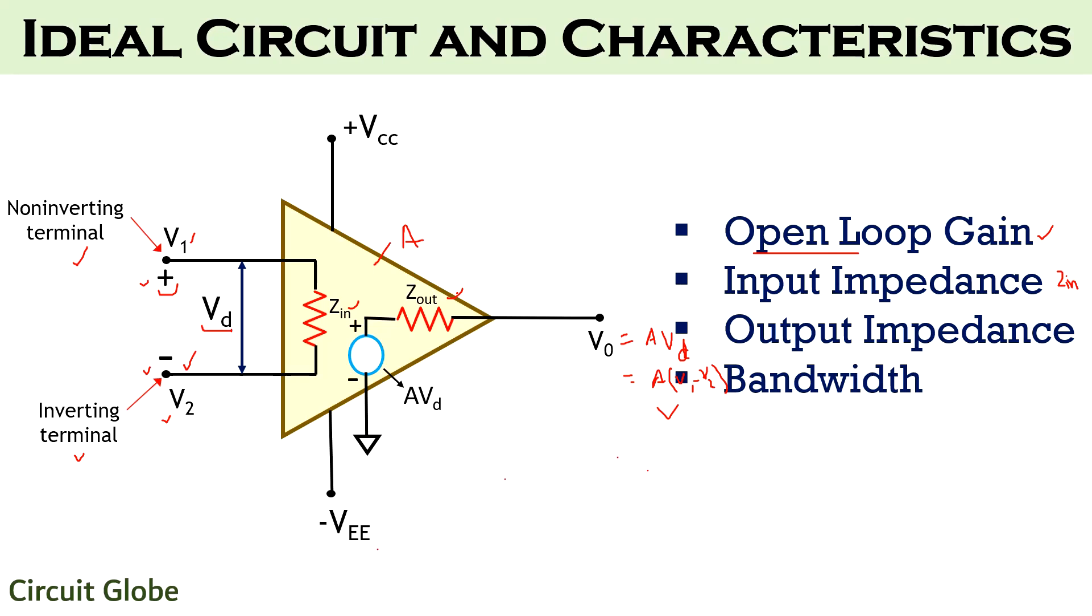Next, let us talk about bandwidth. Bandwidth is also an important characteristic and should be considered infinite ideally. An ideal op-amp will be able to amplify any frequency signal thereby exhibiting infinite bandwidth. But in practicality, the bandwidth of the op-amp is limited by the gain bandwidth product which is equivalent to that frequency where the gain of the amplifier becomes unity.